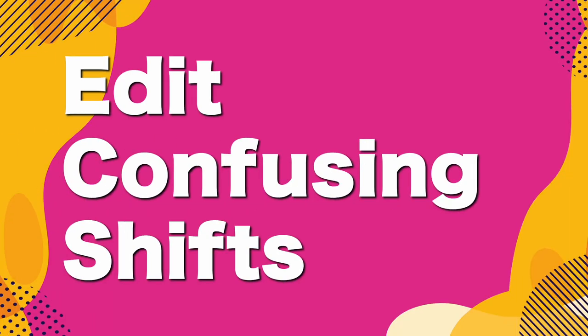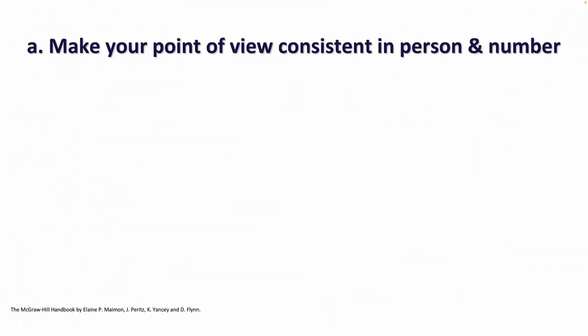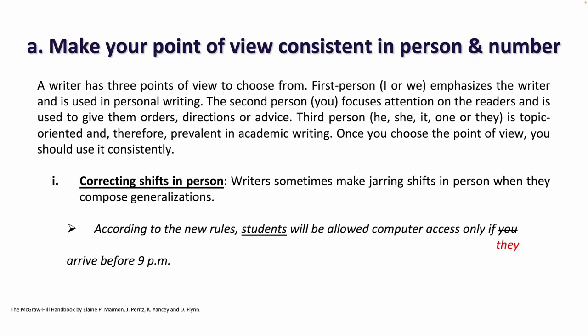We're going to start with editing confusing shifts. The first point will be: make your point of view consistent in person and number. A writer has three points of view to choose from. First person — I or we — emphasizes the writer and is used in personal writing. The second person — you — focuses attention on the readers and is used to give them orders, directions, or advice. Third person — he, she, it, one, or they — is topic-oriented and therefore prevalent in academic writing. Once you choose the point of view, you should use it consistently.